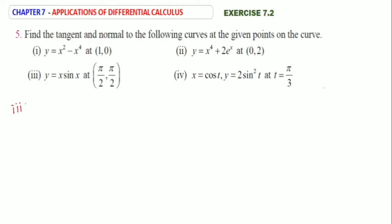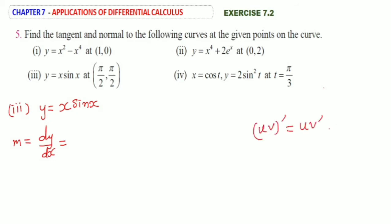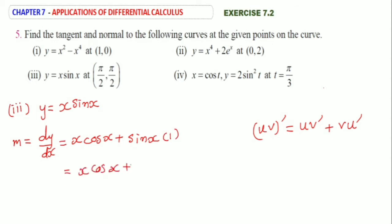Third subdivision: y is equal to x sin x. Therefore, slope m is equal to dy by dx. For x sin x, we use the UV method of differentiation. UV whole dash is equal to u v dash plus v u dash. So x differentiates to 1, and sin x differentiates to cos x. This gives dy by dx is equal to x cos x plus sin x.